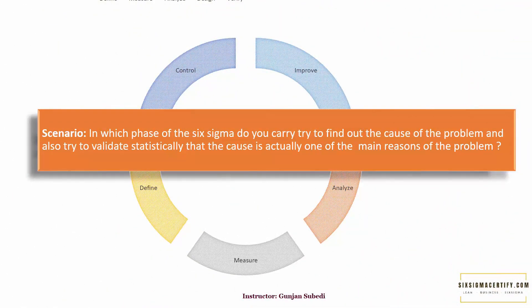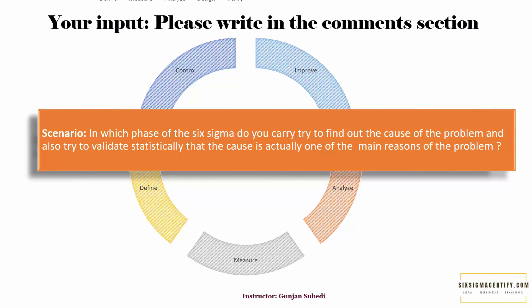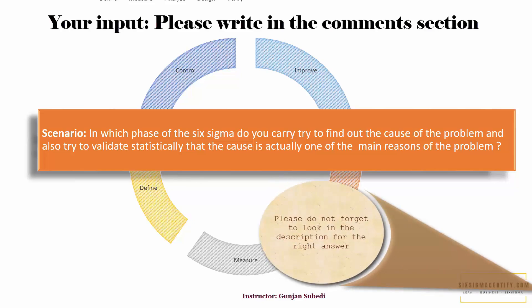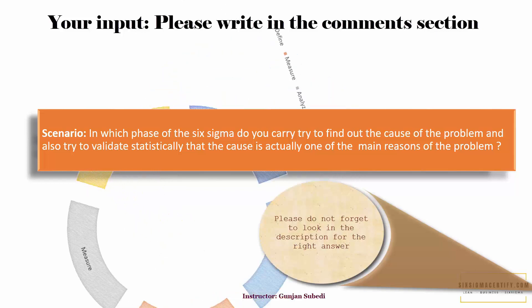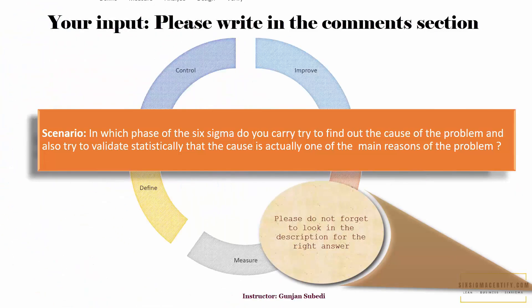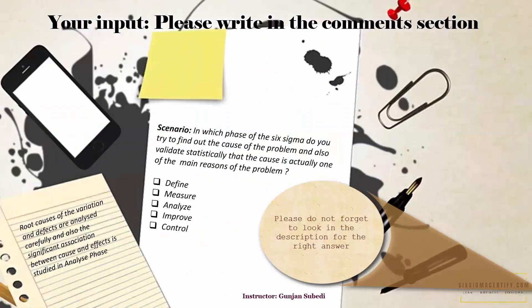In which phase of Six Sigma do you try to find out the cause of the problem and also validate statistically that the cause is actually one of the main reasons of the problem? We have five stages in the DMAIC phase of Six Sigma: define, measure, analyze, improve, and control. Out of these five phases, we have to find in which phase we find the root cause and also validate statistically that it is a significant cause. Your options are define, measure, analyze, improve, and control.